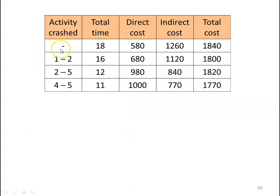Summary table: Without crashing, normal time is 18 days, direct cost ₹580, indirect cost ₹1,260, total cost ₹1,840. Crashing activity 1-2: time 16 days, direct cost ₹680, indirect cost ₹1,120, total ₹1,800. Crashing activity 2-5: time 12 days, direct cost ₹980, indirect cost ₹840, total ₹1,820. Crashing activity 4-5: time 11 days, direct cost ₹1,000, indirect cost ₹770, total ₹1,770. This is how we crash activities in the critical path step by step to find minimum project duration and cost.